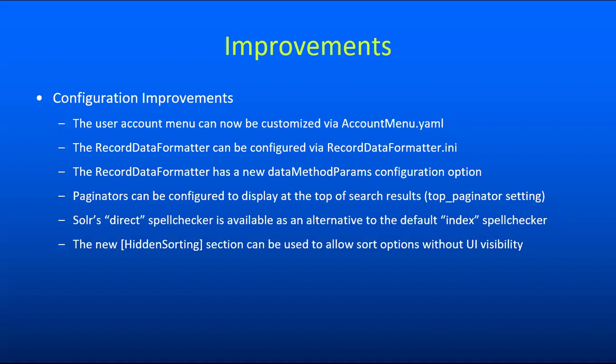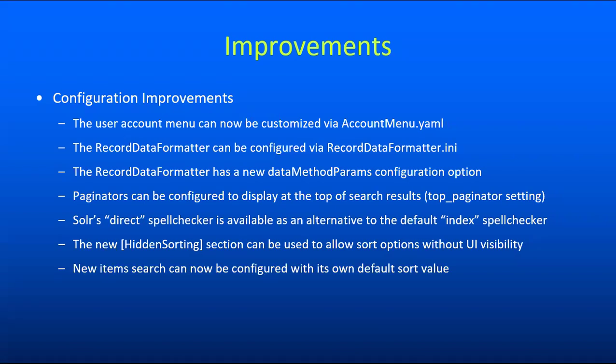We've added a new hidden sorting section to some of our configuration files, which can be used to make certain sort options legal without actually showing them in the user interface sort dropdown. This is useful, for example, if you want to provide direct links to results sorted in a particular way, but that sort isn't more generally useful to your users. We've also added some new functionality to our new item search — it can now be configured to sort its results differently than other search result lists, for example sorted by date of addition to the collection.